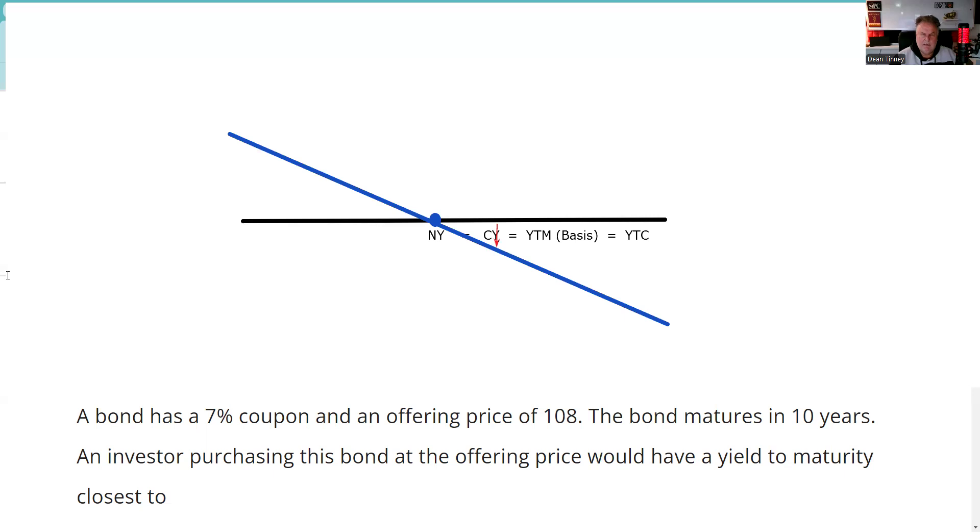Right? Current yield is going to be there. Yield to maturity is there. Yield to call. It's very testable to know that when you purchase a bond at a premium, the yield to call is the lowest yield and the most likely yield. Yield to worst, because interest rates have gone down.